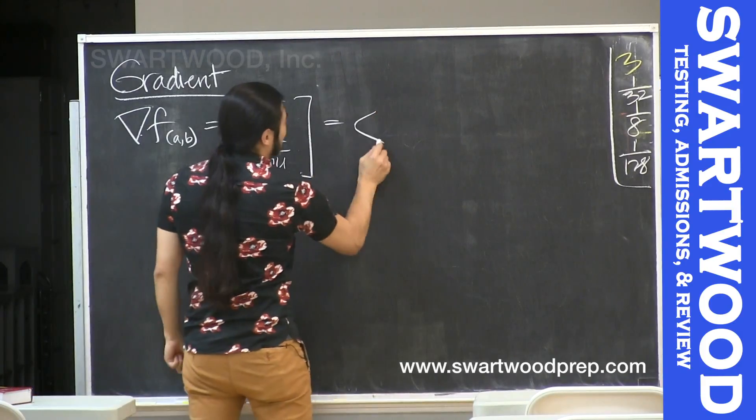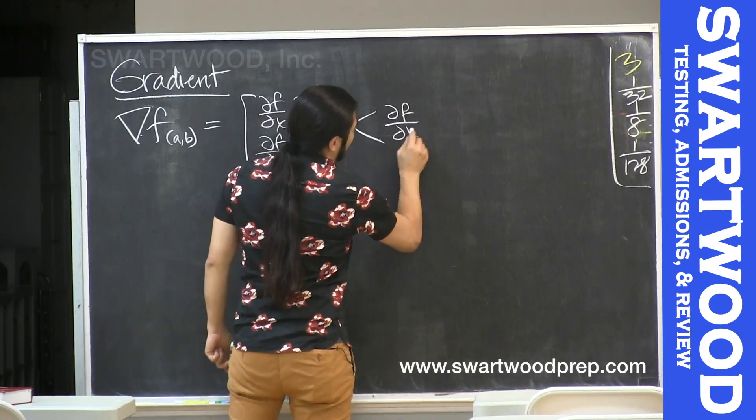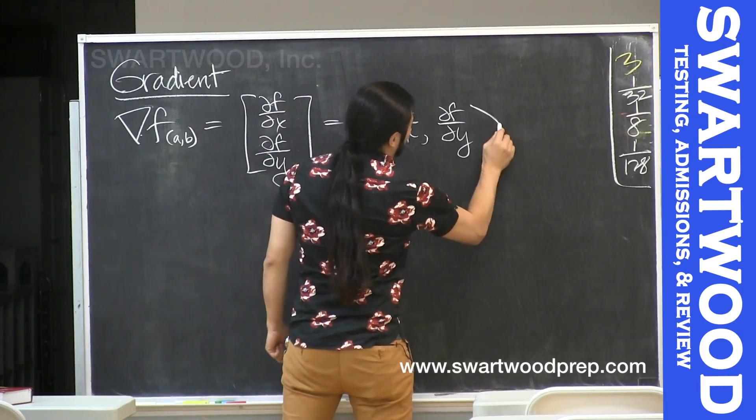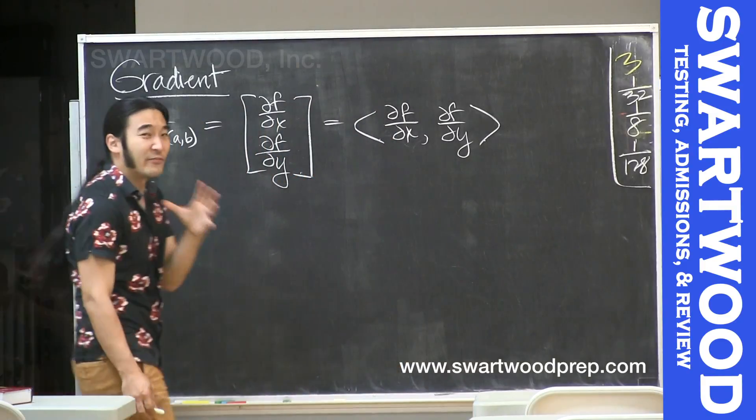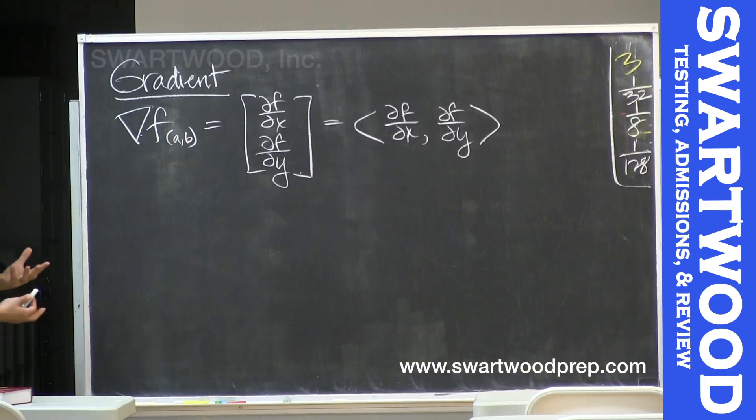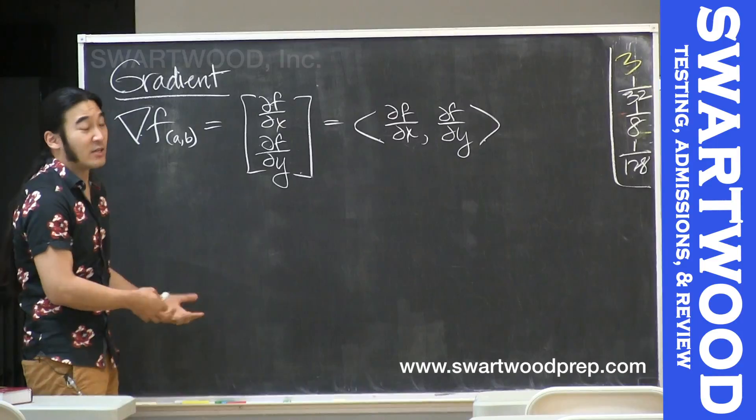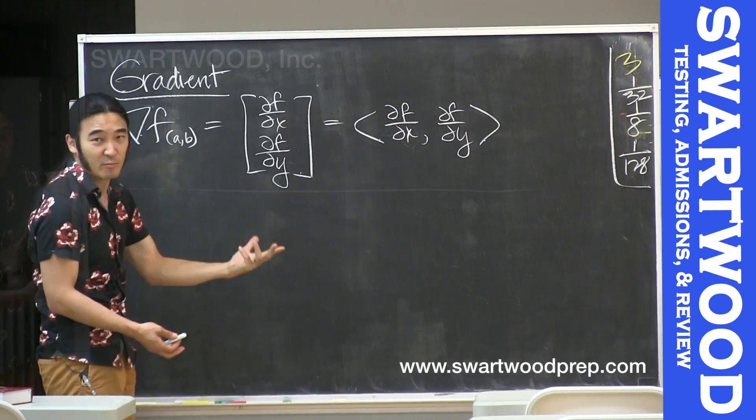You can write it in many ways. You can write it like this, or like this. Anything is good. One thing for sure is whenever we evaluate the gradient, we've got to plug in a number. So if you want a concrete number for the gradient, you've got to evaluate it at some given point.